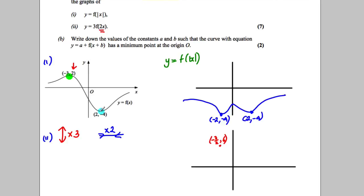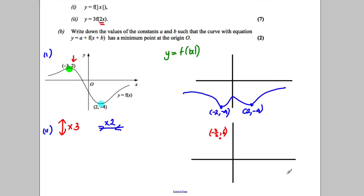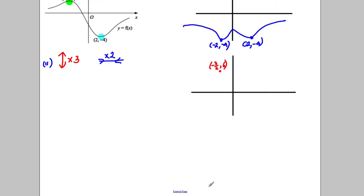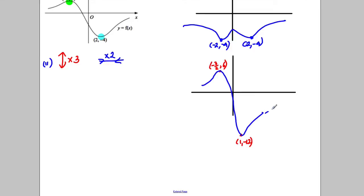So we're going to have a bit of a squash. This point is going to be negative 3 over 2, 6. And what's going to happen to the other point? The y number is going to be multiplied by 3, so it's going to be way down at negative 12, and the x coordinate is going to be at 1. So we get 1, negative 12. Other than that, it tries to retain its shape.